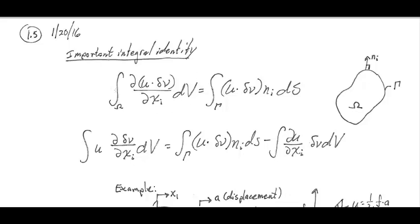Say we take a volume integral. Here's my material. It has volume omega, it has a boundary gamma.